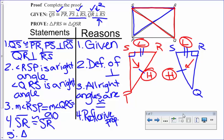Let's restate the proof. Triangle PRS is congruent to triangle QSR. And that reason is HL. Okay? So that proof is done.